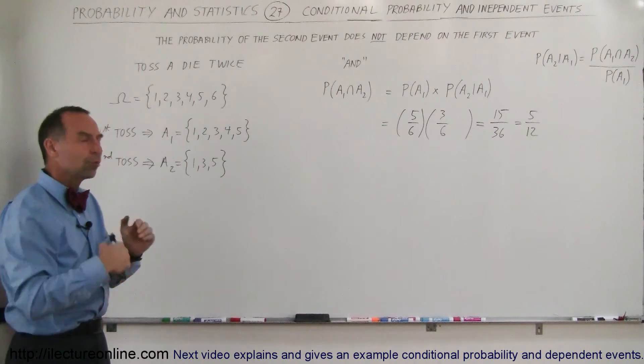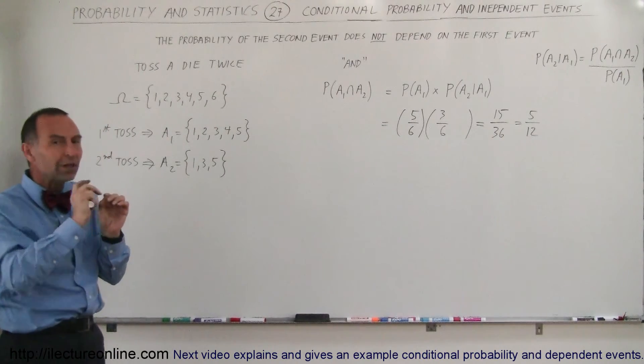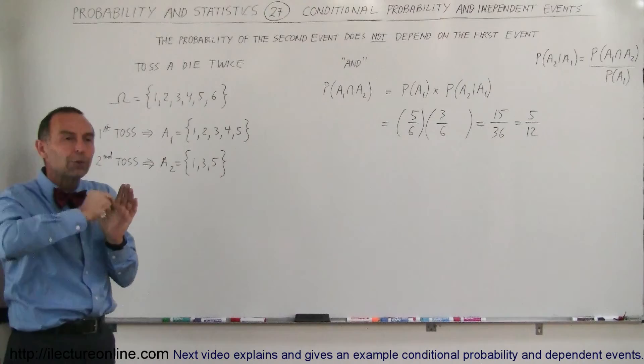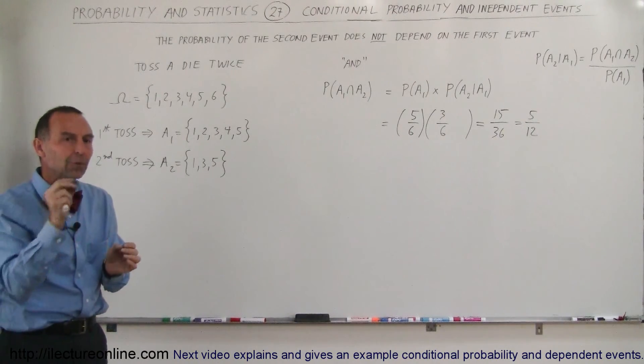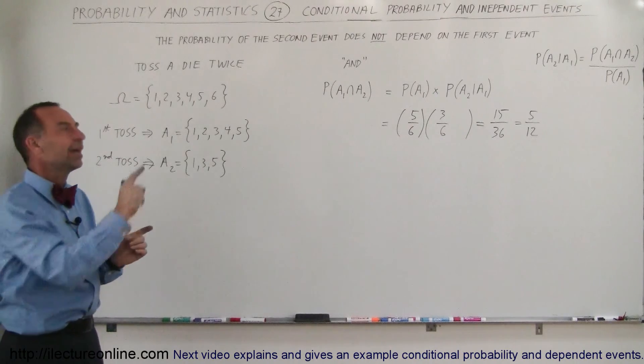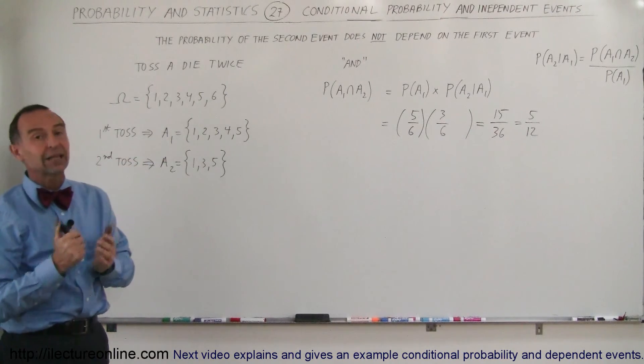Now, what we'll see in the future is we'll see some more examples where something will happen in the first event that will affect the way we look at the probability of the second event. Even though the events are independent, it will still affect the second event, and we'll see an example of that in the next video.